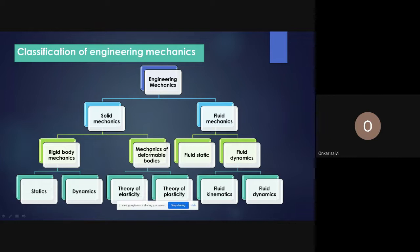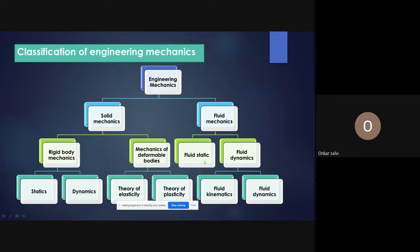In semester three, you studied Strength of Materials, which is nothing but mechanics of deformable bodies — when force is applied, there is deformation giving rise to stress and strain. Strength of Materials is further classified as theory of elasticity and theory of plasticity. The second branch, fluid mechanics, deals only with fluids and is classified as fluid statics and fluid dynamics, which includes fluid kinematics and fluid kinetics.